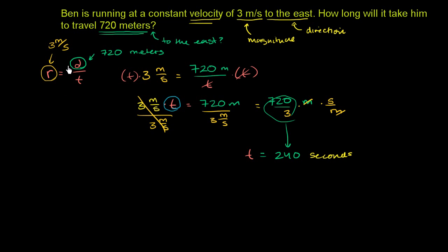Sometimes in physics classes you'll see all these formulas, but I want you to understand that they're really just algebraic manipulations of each other. You shouldn't memorize them — instead, start from the common sense idea that rate equals distance divided by time, and manipulate it to get other common sense results.